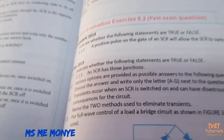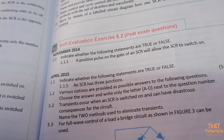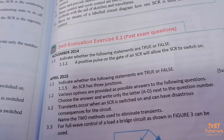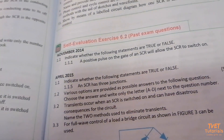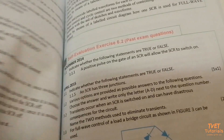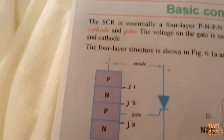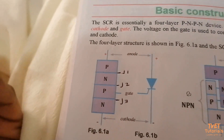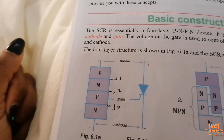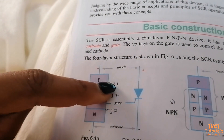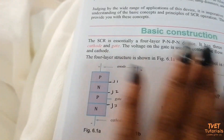April 2015 exam question: indicate whether the following statement is true or false. 'An SCR has three junctions.' This is true. Remember, a diode has one junction, a transistor has two junctions, and an SCR has three junctions.